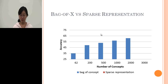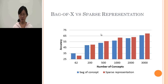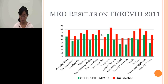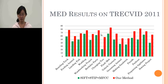We compare using bag-of-concepts versus sparse representation for the videos. On average, sparse representation is around two to three percent better than bag-of-concepts. Finally, the combination of our proposed method versus the traditional baseline of hand-designed features SIFT, STIP, and MFCC shows an improvement from 51% to 67% on average.